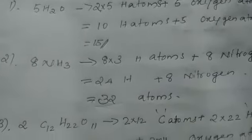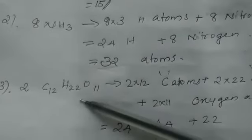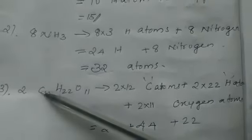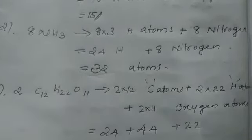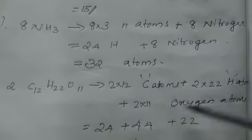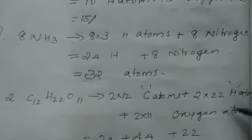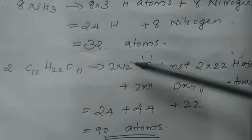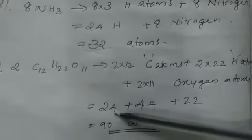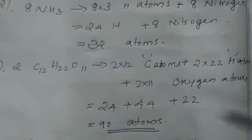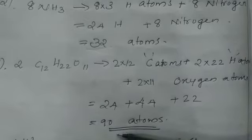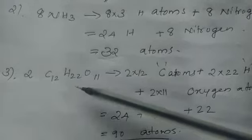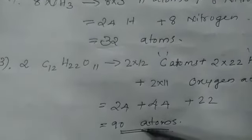Then 2 sugar molecules, C12H22O11. But this 2 is common for carbon, hydrogen and oxygen. 2 into 12 carbon atoms plus 2 into 22 hydrogen atoms plus 2 into 11 oxygen atoms. Then we have to find out the value: 2 into 12 is 24, 2 into 22 is 44, 2 into 11 is 22. The total value is 90 atoms. So in 2 sugar molecules, it contains 90 atoms.